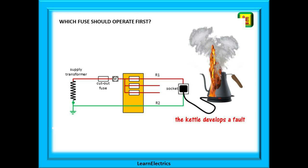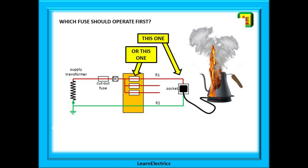All of a sudden the kettle develops a fault and significant fault current flows. Which protected device would you expect to operate first? We would hope it was the fuse in the kettle that went first or perhaps the breaker in the consumer unit but certainly not the main fuse.